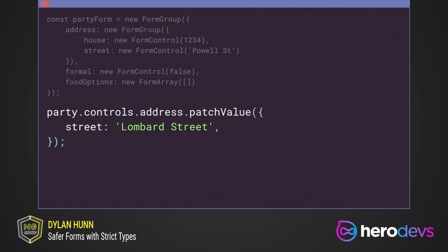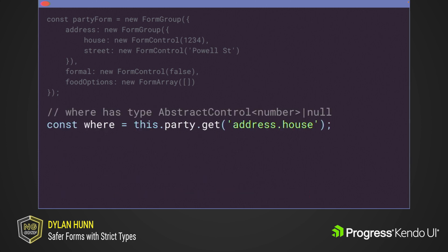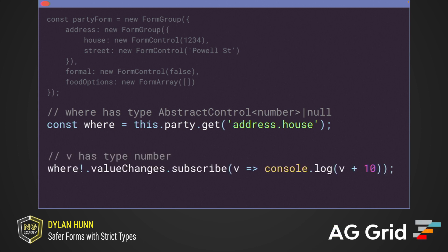We could have used patch value instead of set value, which relaxes the constraint — we can now actually omit keys, and that's totally fine. But again, if we specify a key with an incorrect name, this produces a compile time error. We also have strong types for the dot get method, which accepts a string containing a path through your nested form groups, as well as the observables. When you have a callback function in your observable, V will now be strictly typed as number.